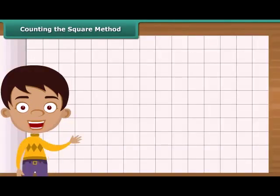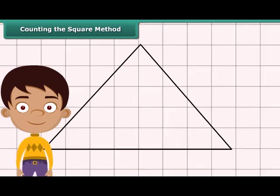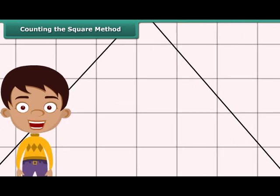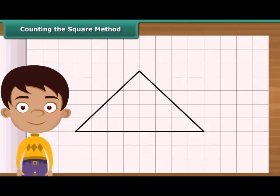Now let us calculate area with the help of a simple method. It is known as the counting the squares method. Draw the triangle on the squared paper. Each square has a side of one centimeter. First, count the complete squares enclosed by the triangle and mark each of these squares as A.